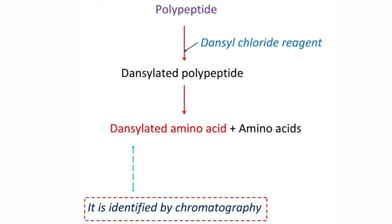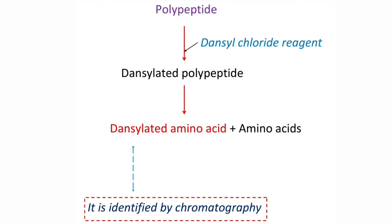The second method for identification of N terminal amino acids uses dansyl chloride. Dansyl chloride forms a bond with the N terminal amino acid to form a dansylated polypeptide. On hydrolysis, this dansylated polypeptide releases dansylated amino acids, which are then identified by chromatography.